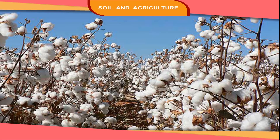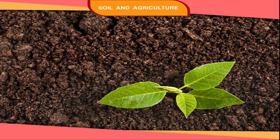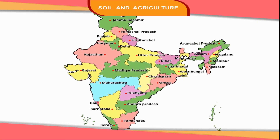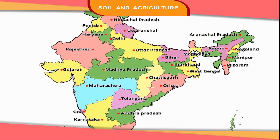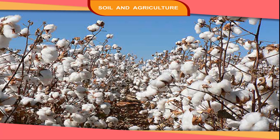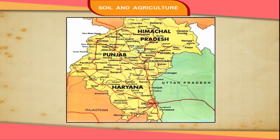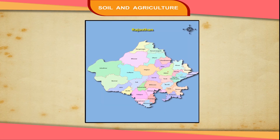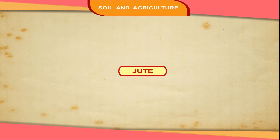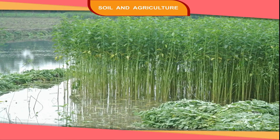Cotton grows well in black soil. Maharashtra and Gujarat are the main cotton producers. Cotton is also grown in Punjab, Tamil Nadu, Rajasthan and Madhya Pradesh.